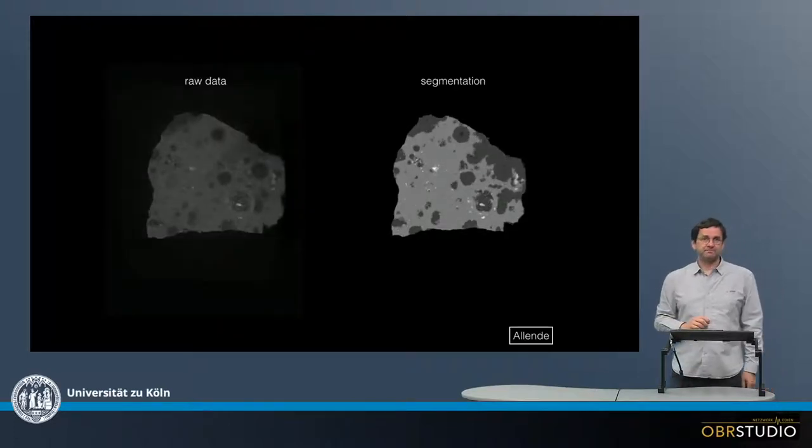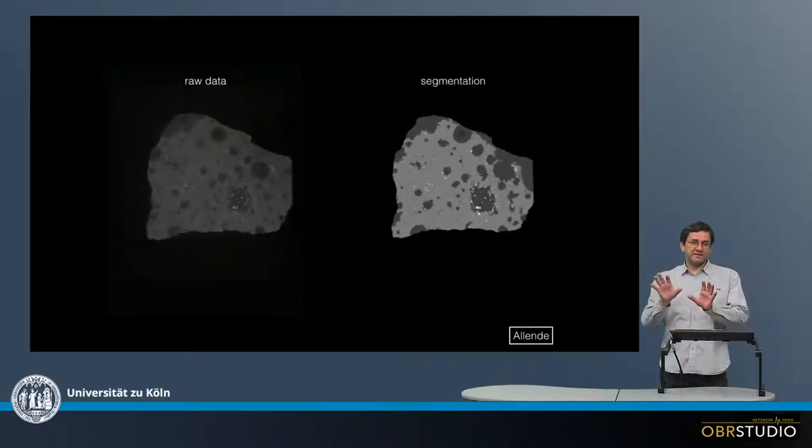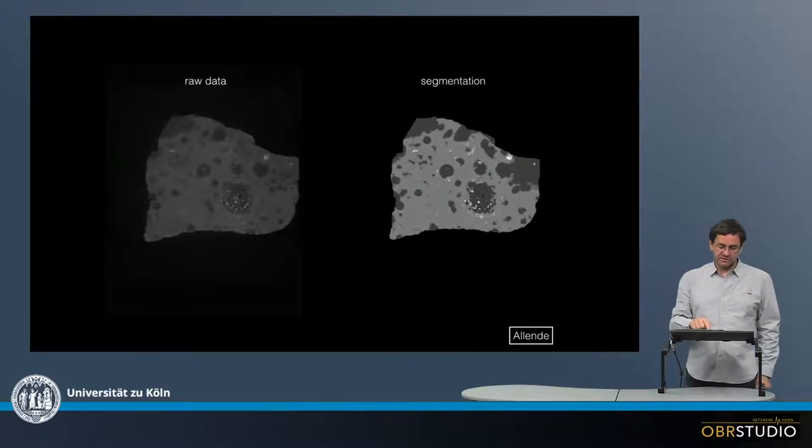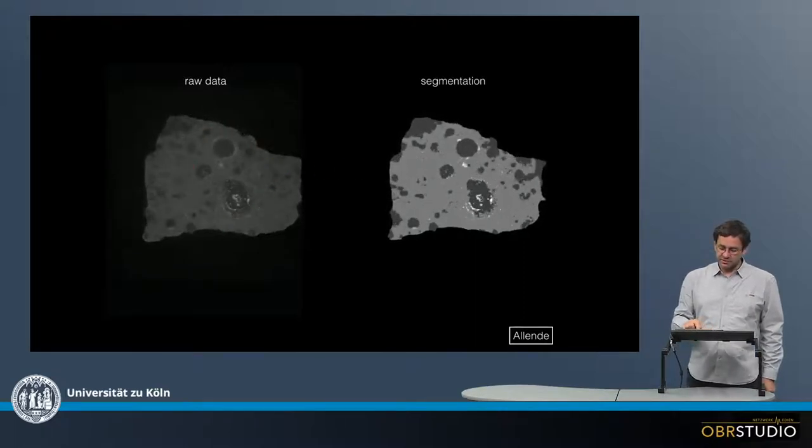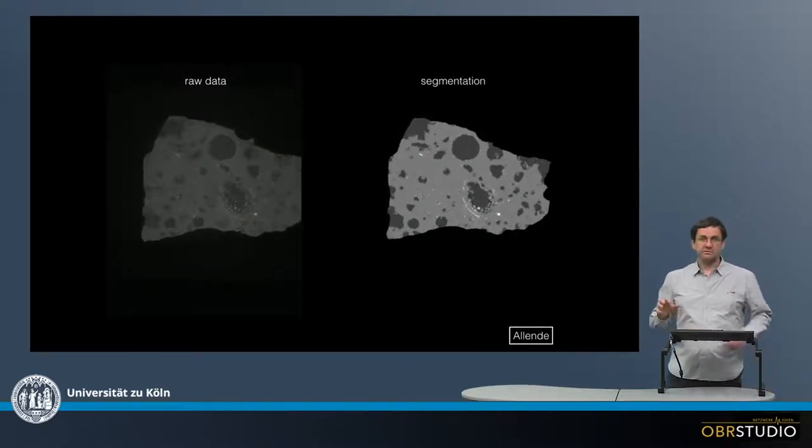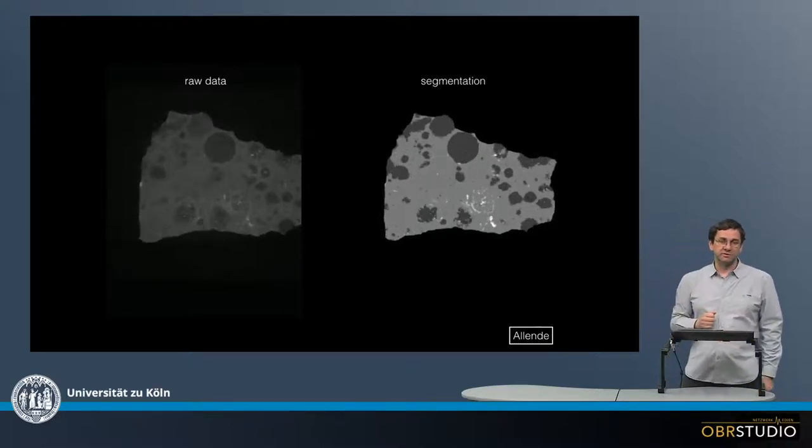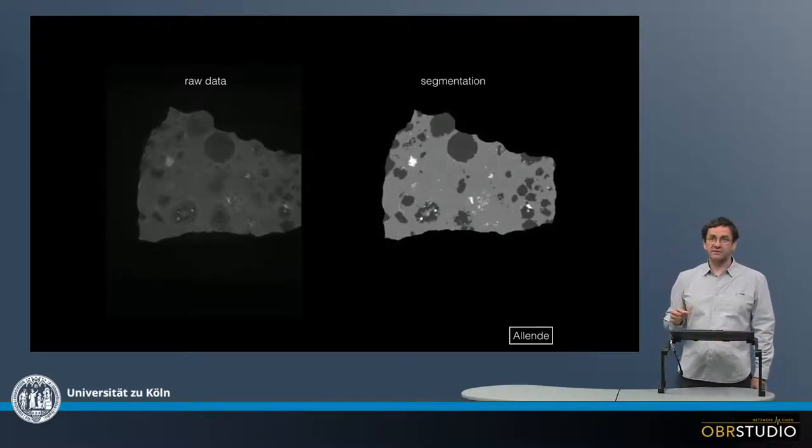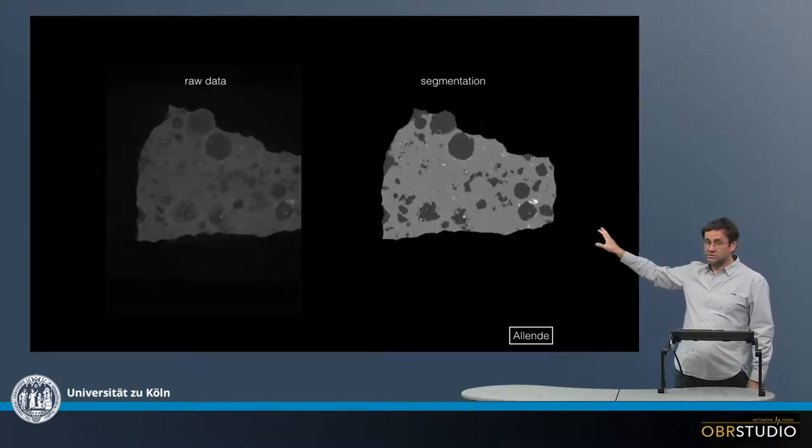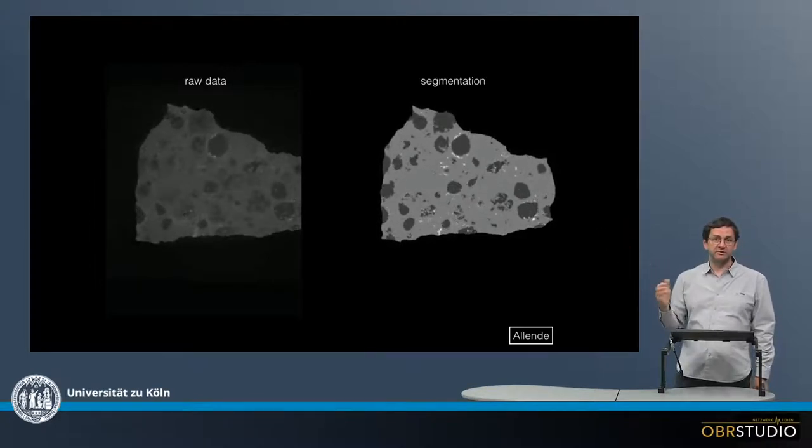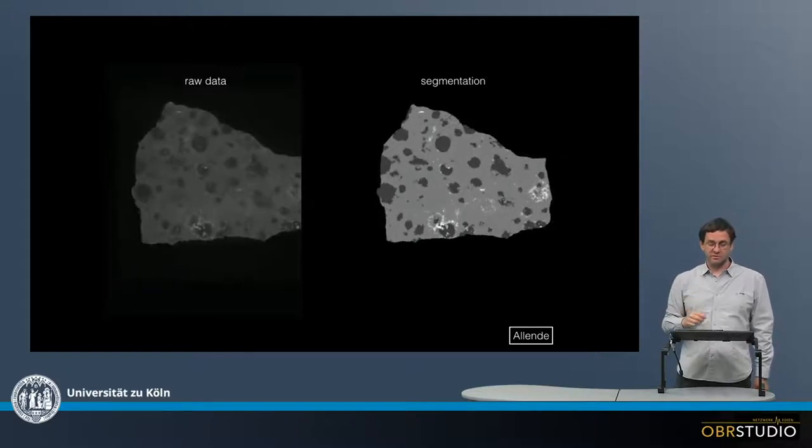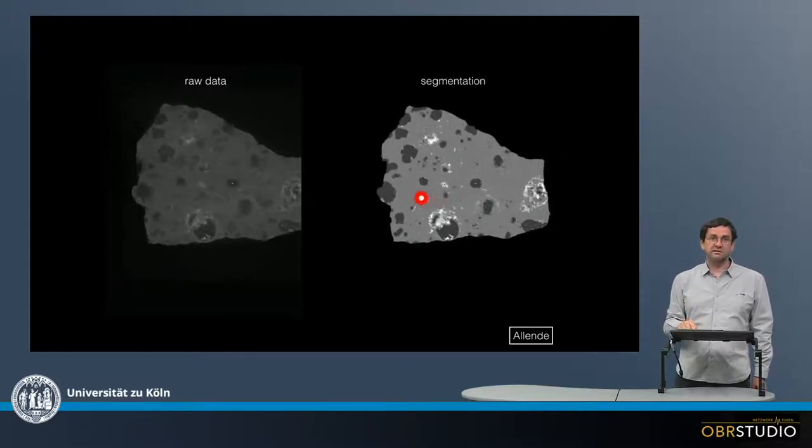Now in the next step, we can then start to segment the image into a more visually easier to distinguish representation. The dark bits here are the chondrules, the lighter gray is the matrix in between. This is an Allende sample, a CV chondrite, and white is opaque phases.